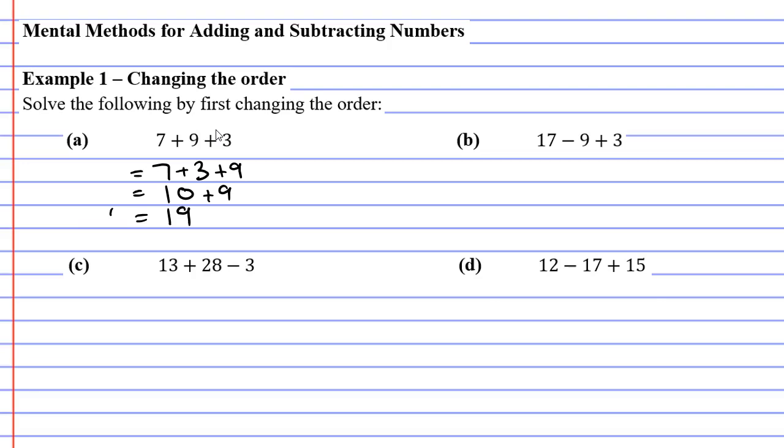Moving on to question B, we're going to change the order again. When you've got a subtraction, you've got to be really careful. That's plus 3, so we're going to write plus 3 next to the 17, and the minus 9 we're going to make sure goes at the very end, moving the 9 with the minus as well.